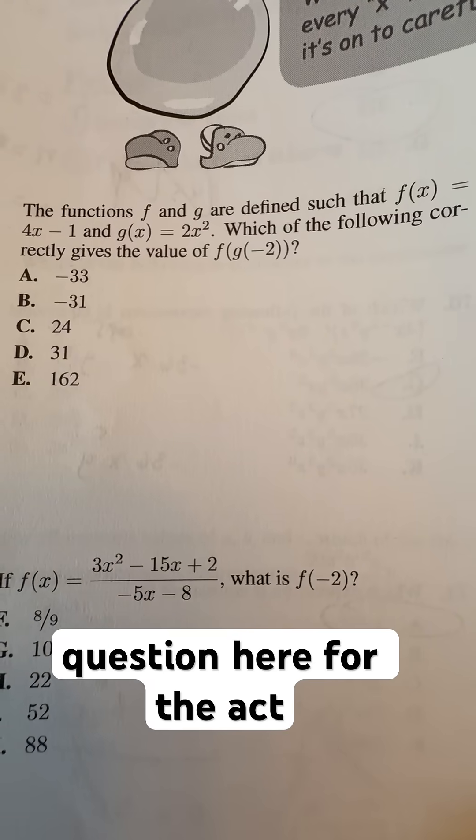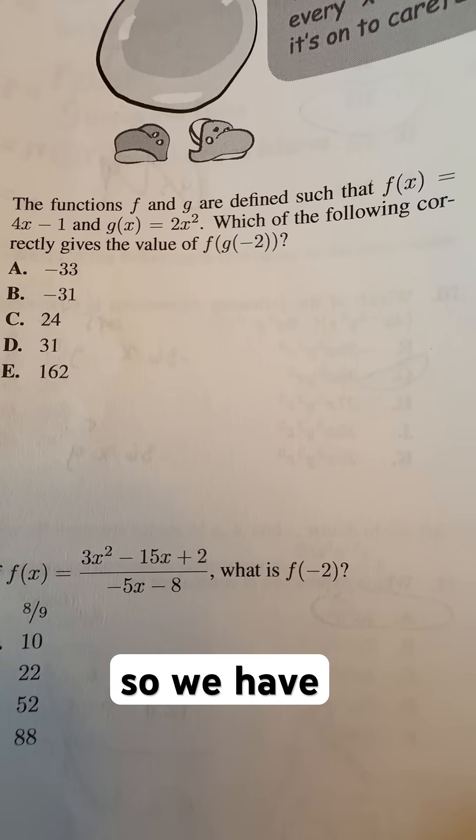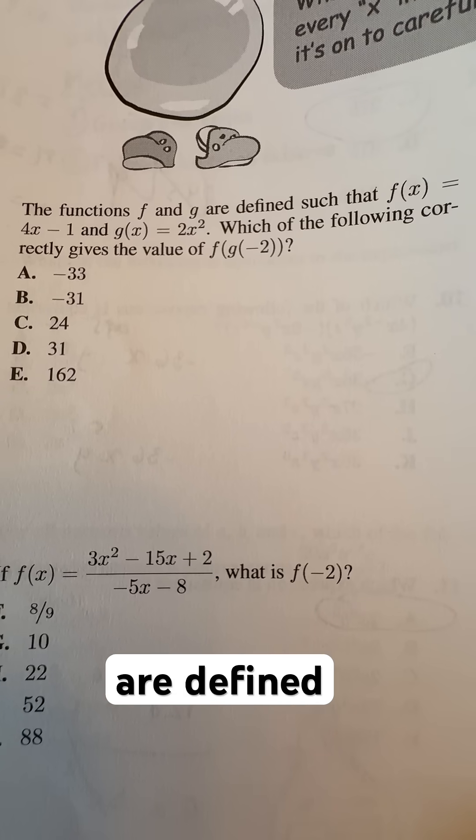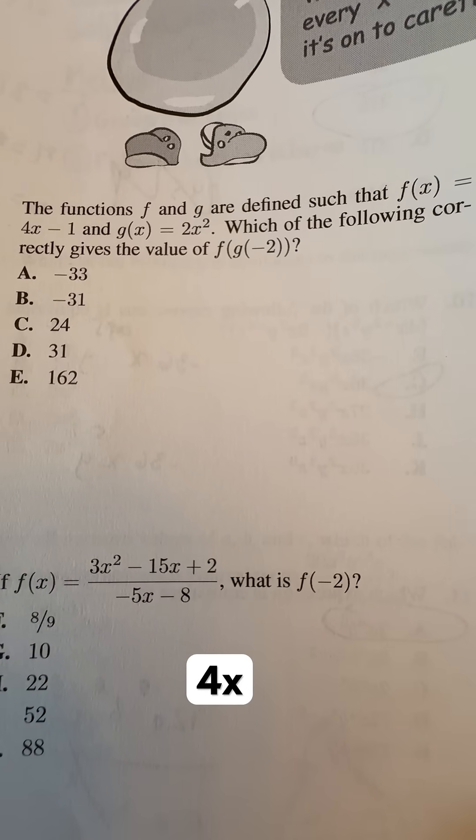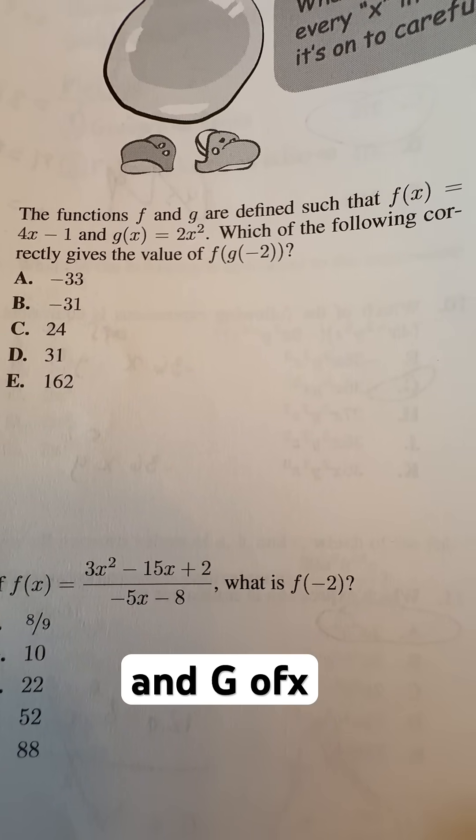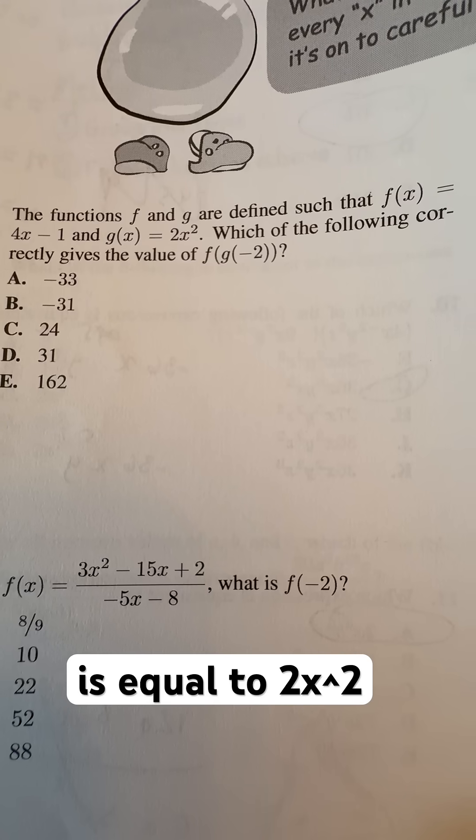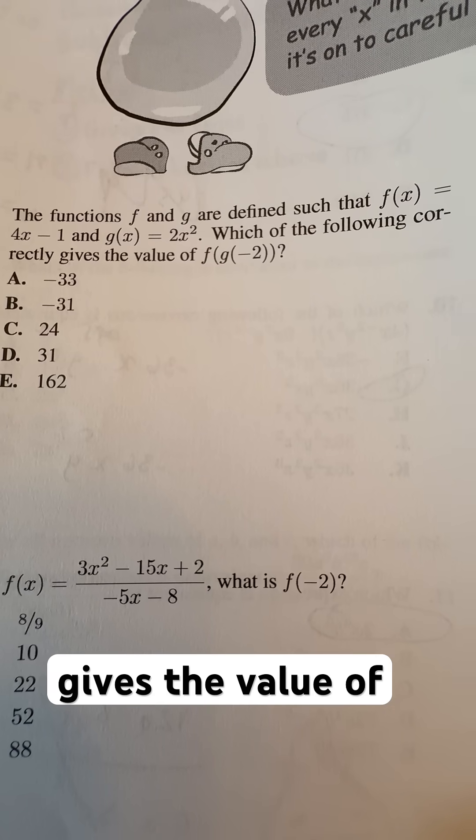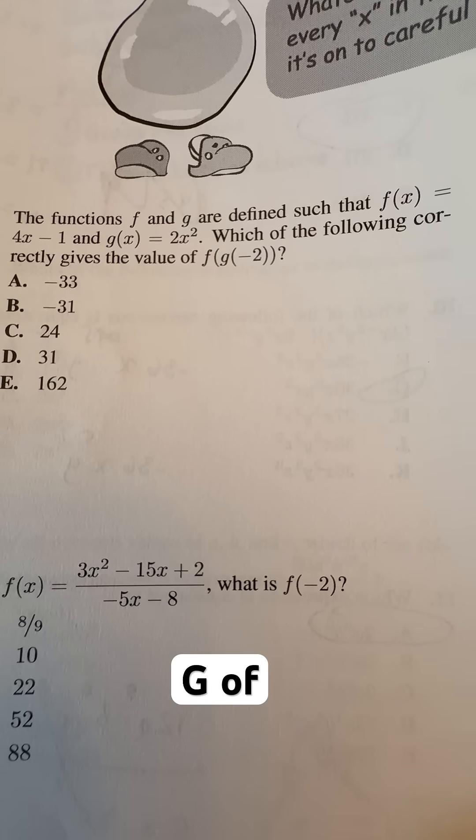Hey everybody, I am here doing this question here for the ACT. We have functions f and g defined where f(x) is equal to 4x minus 1, and g(x) is equal to 2x squared. We're asked which of the following correctly gives the value of f of g of negative 2.